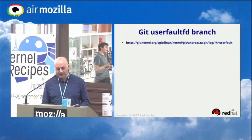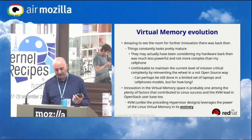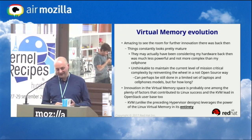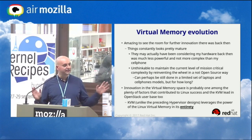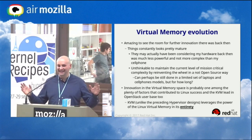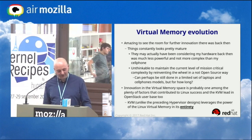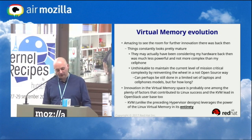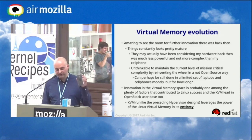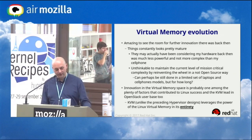The development branch with the most recent userfaultfd features is in the speaker's git tree on kernel.org. There is still enormous room for further innovation — 20 years ago everything seemed already done. Open source is the only viable path forward given the complexity involved. Linux runs from mobile phones all the way to enterprise servers.